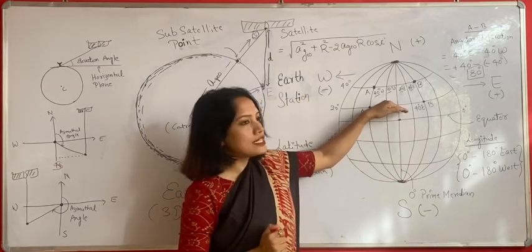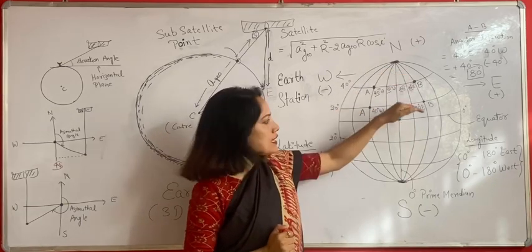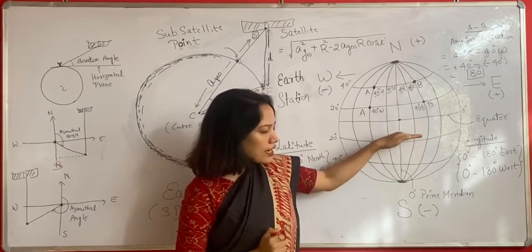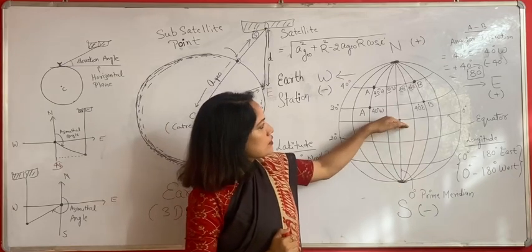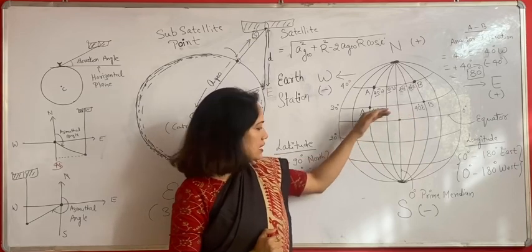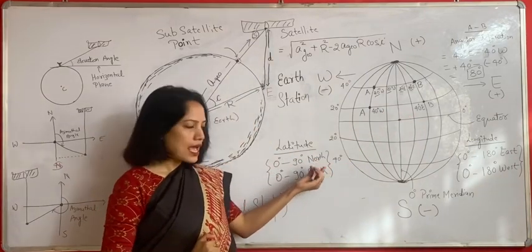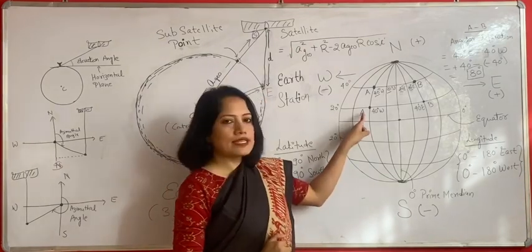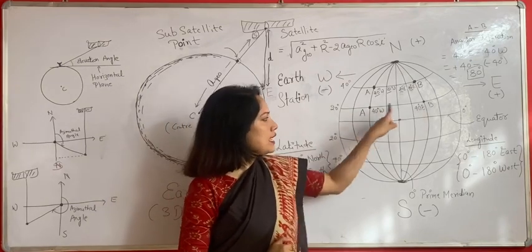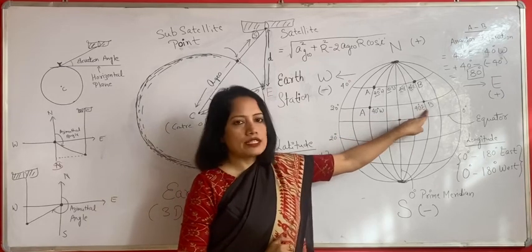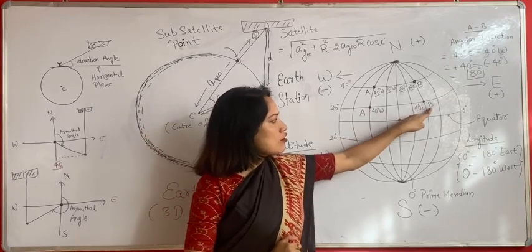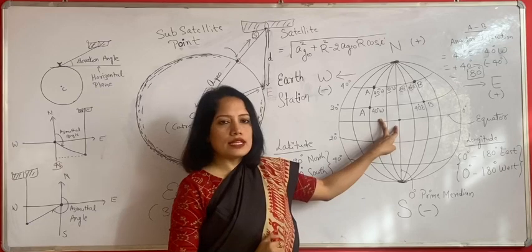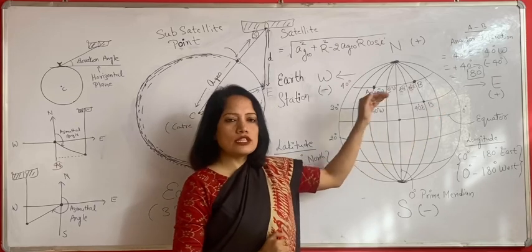All lines above 0° latitude are northern latitudes, and below 0° are southern latitudes. Northern and southern latitudes both range from 0° to 90°. For example, if points A and B are at 40° west and 40° east longitude respectively, and we need the angular separation between them, we take the eastern longitude minus the western longitude.